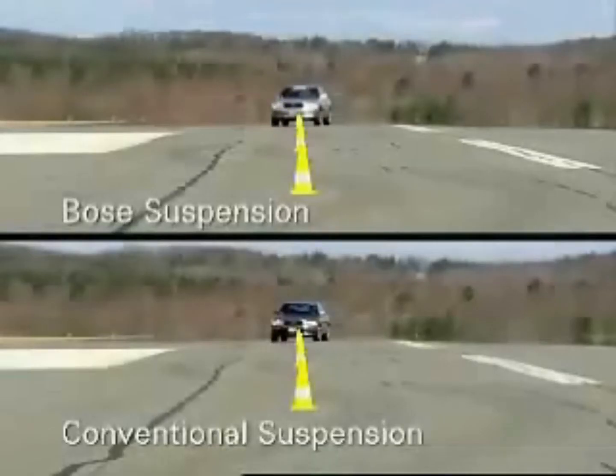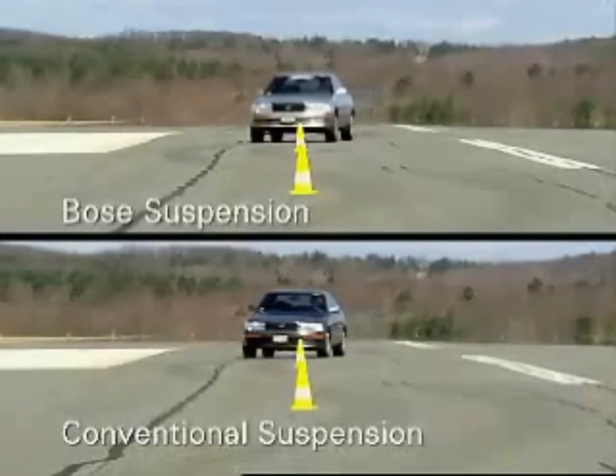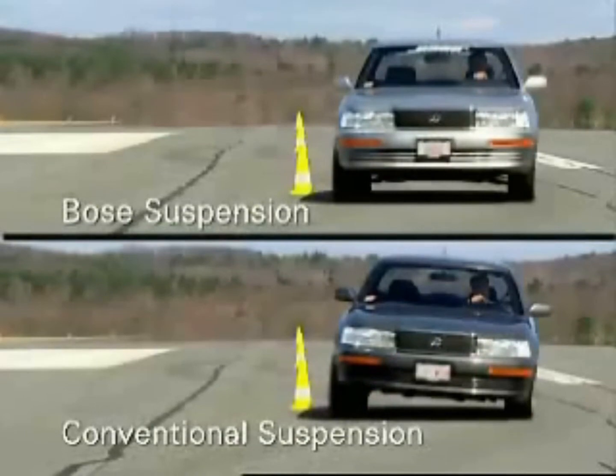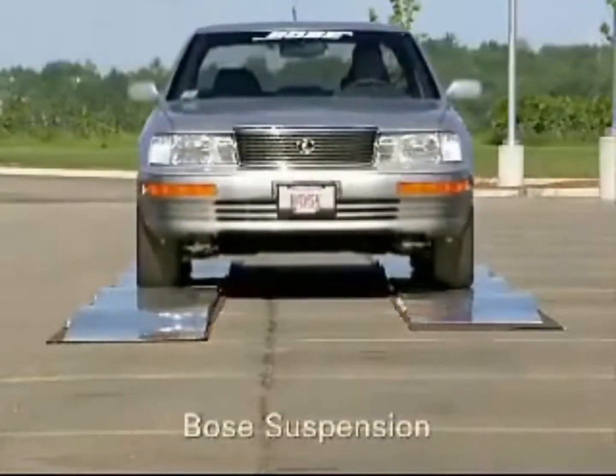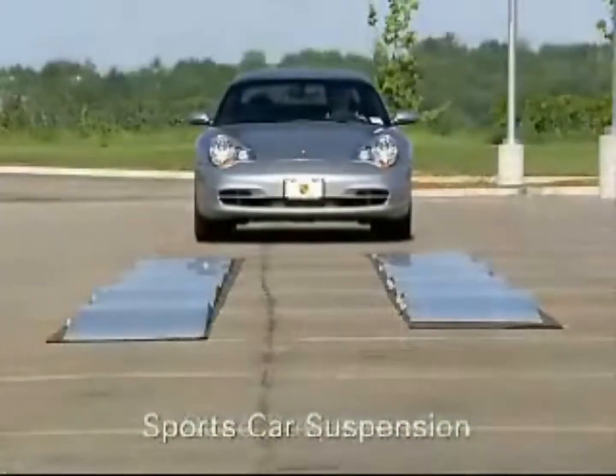You have two suspension systems. The bottom one is the conventional suspension system and the upper one is the active suspension system. You can see the difference in performance on a bump — this is the conventional suspension and here is the active suspension system.